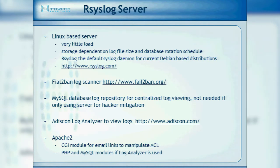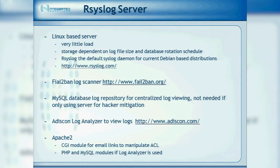I use a MySQL database because I have a central logging server and multiple PBXs — I can go to one place and review logs. You don't need MySQL; fail2ban can just run without it. Adiscon Log Analyzer is a web-based utility that sits on top of MySQL and gives you visual log file searching. I also use Apache for CGI scripts — fail2ban runs scripts, gives me notifications, and I have web links to interact with the ACLs through the Apache server. The last three components are actually optional.